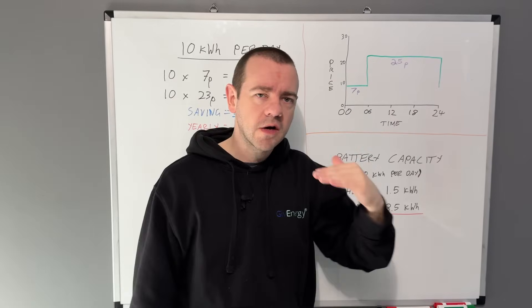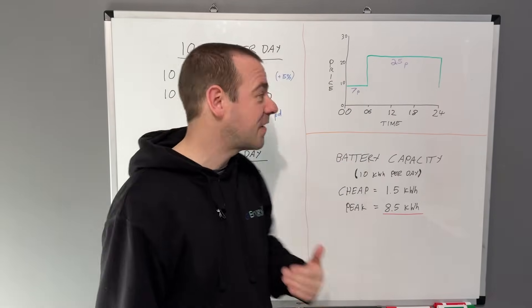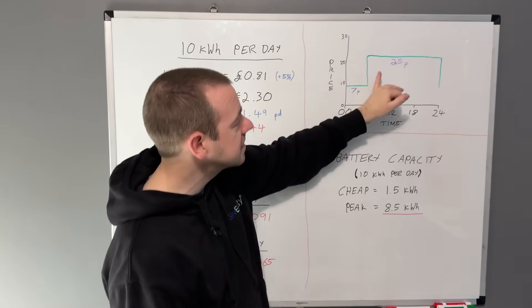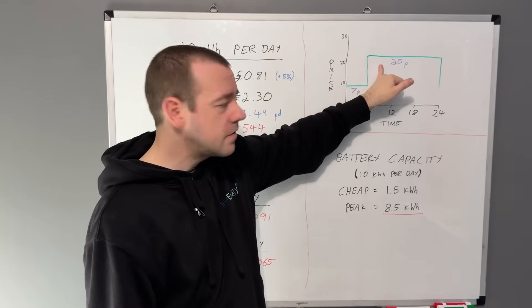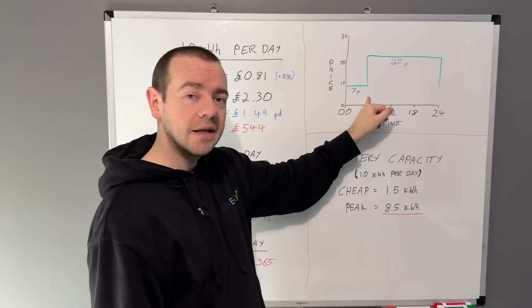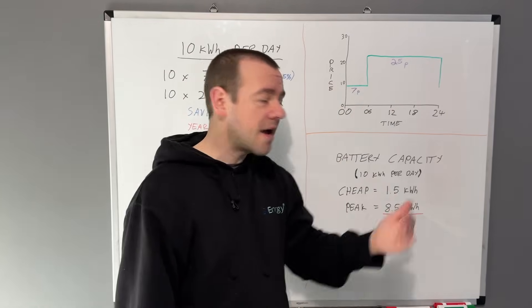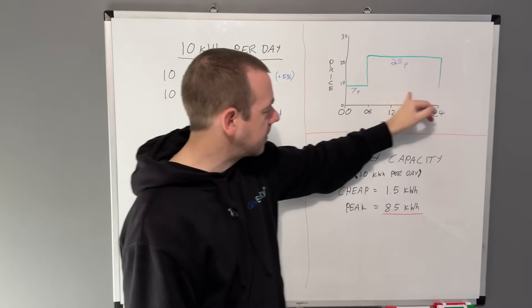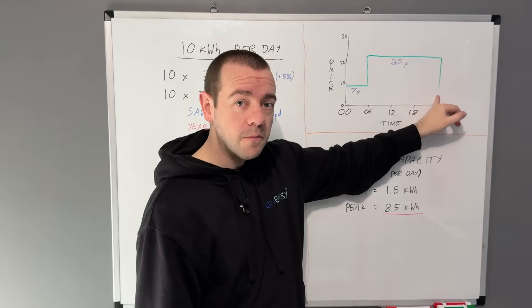So the best flat rate tariff I could get from my energy provider was about 22 to 23 pence per kilowatt hour. So essentially this tariff means I'm paying more during the day but considerably less at night. But with the battery loading up on cheap electric, I can avoid the vast majority of peak pricing.